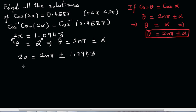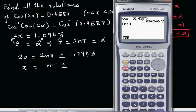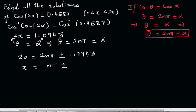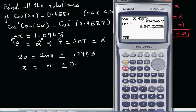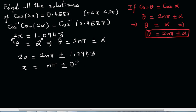I can divide the whole thing by 2. So x equals nπ plus or minus, dividing by 2. I should have done the rounding at this step. Rounding it to 4 decimal places, it'll be 0.5471.